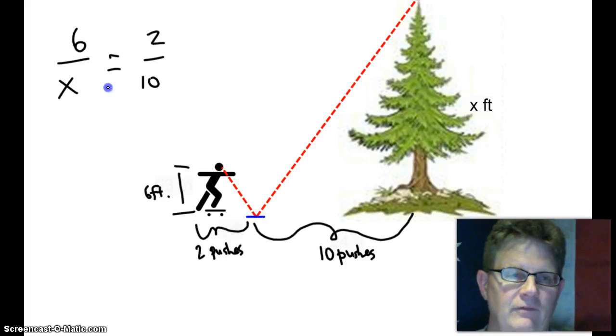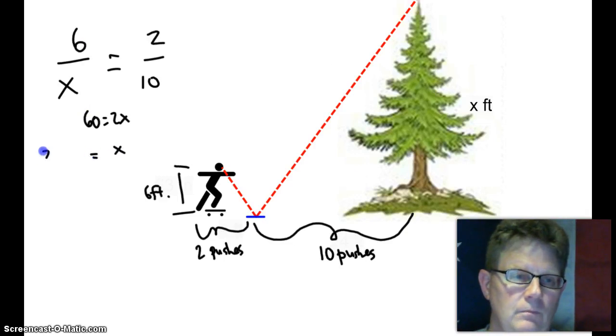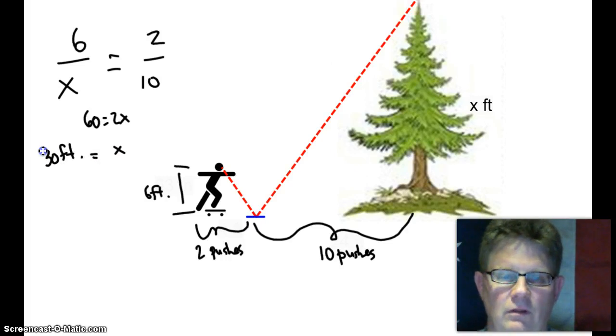Cross multiply and divide. Sixty equals two x. Divide both sides by two. That tree is thirty feet tall, just by using indirect measurement.